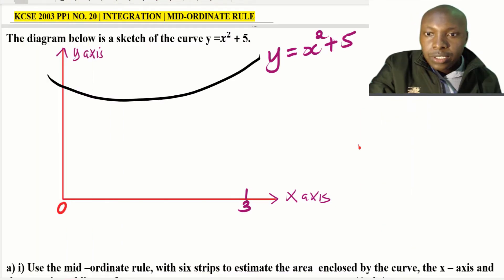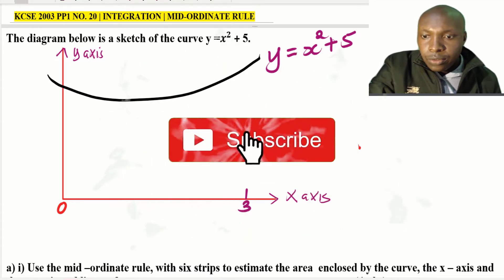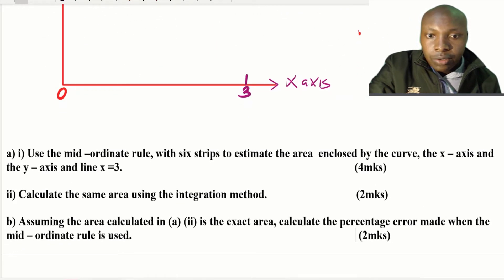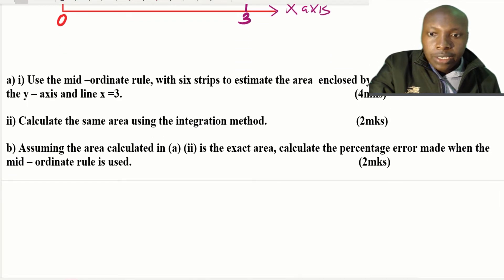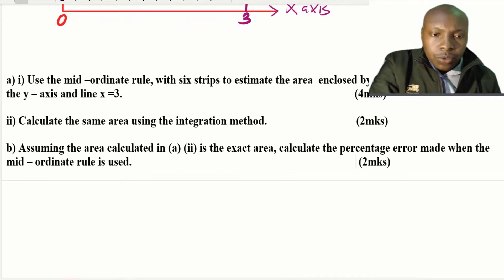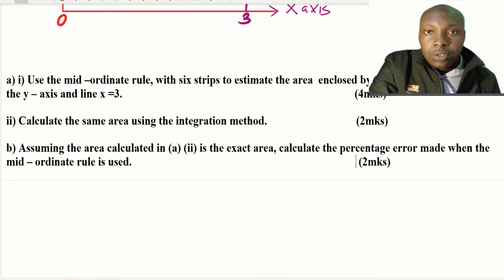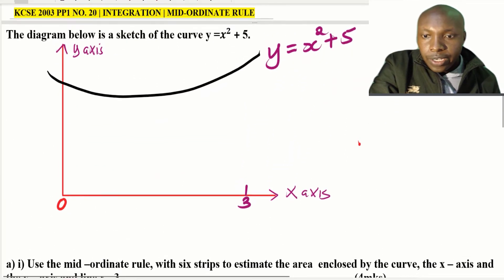The question reads: the diagram below is a sketch of the curve y = x² + 5. The curve runs from 0 to 3 on the x-axis. Part one: use the Mid-Ordinate Rule with six strips to estimate the area enclosed by the curve, the x-axis, and the line x = 3. Part two: calculate the same area using the integration method. Part b: assuming the area calculated in part two is the exact area, calculate the percentage error made when the Mid-Ordinate Rule is used.